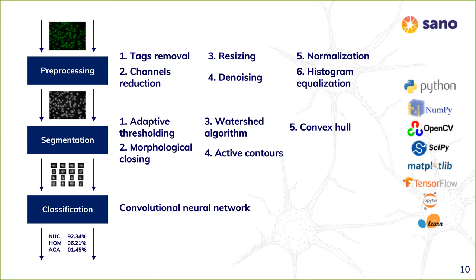We also use active contours — an algorithm that fits a contour to image edges, resulting in much smoother cell edges. Finally, we apply the convex hull so the contour is a convex shape. The last part is classification of each cell using a neural network — a customized network designed from scratch with about 11 layers. After each cell is classified, we calculate the weighted or majority voting to return the final result.